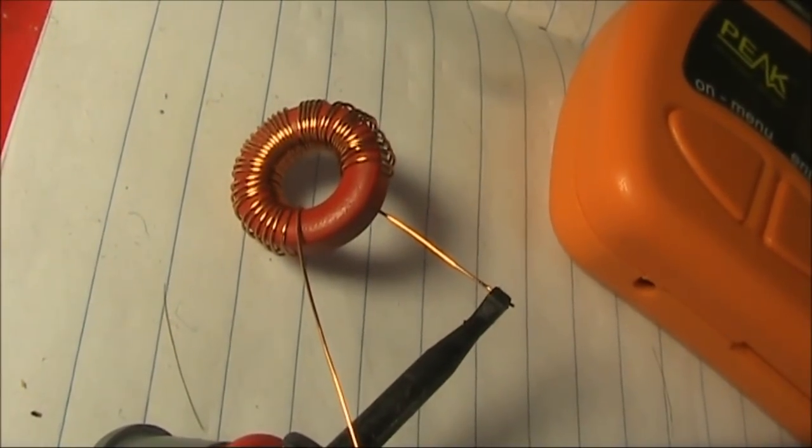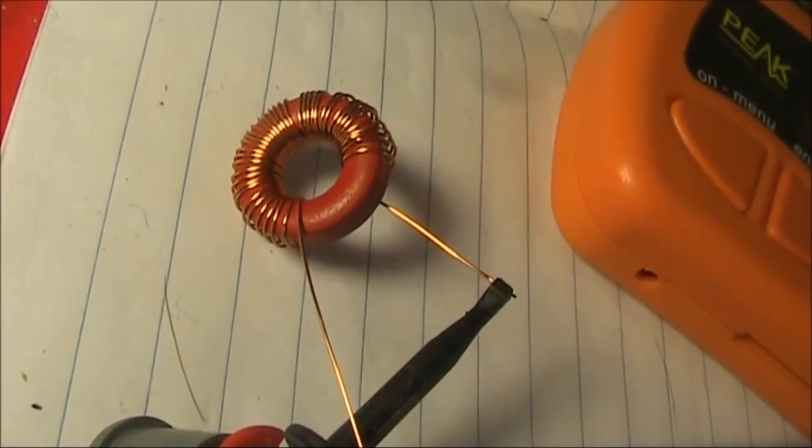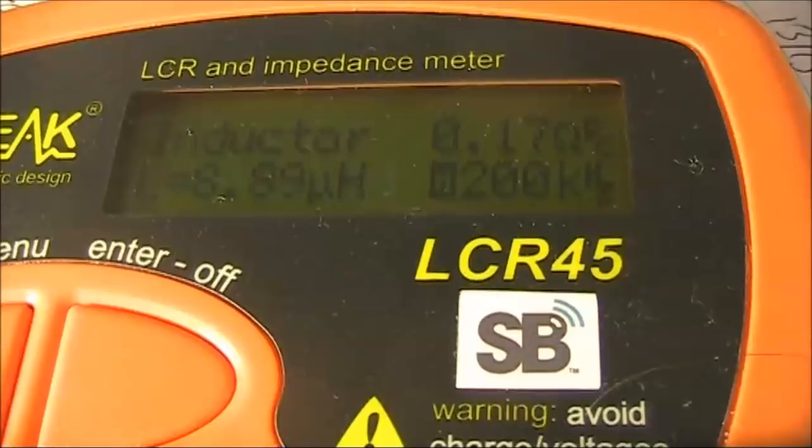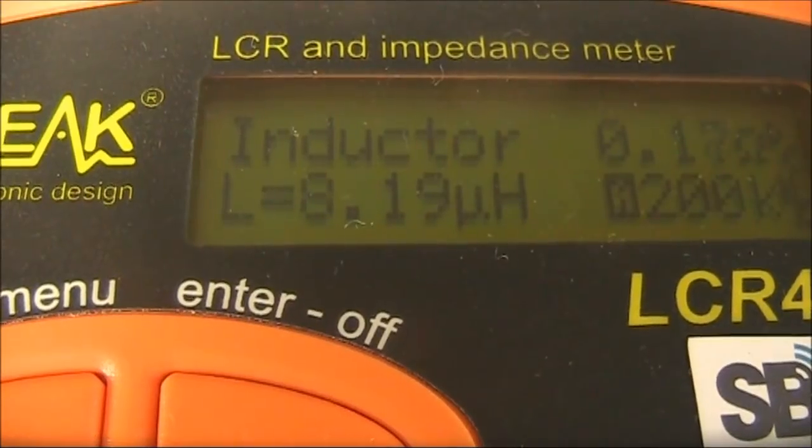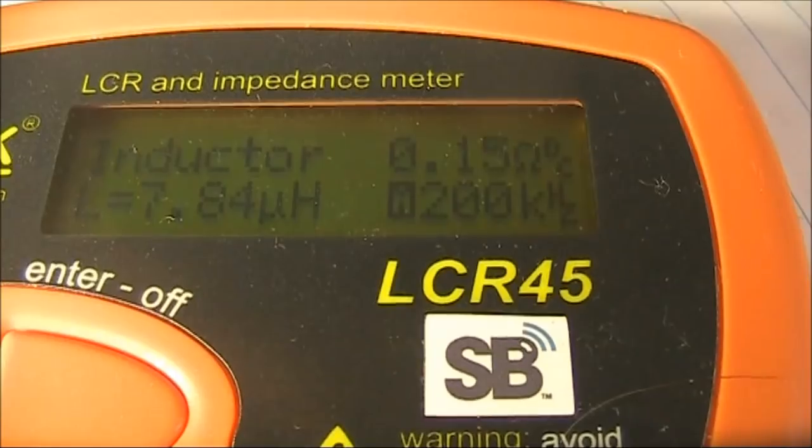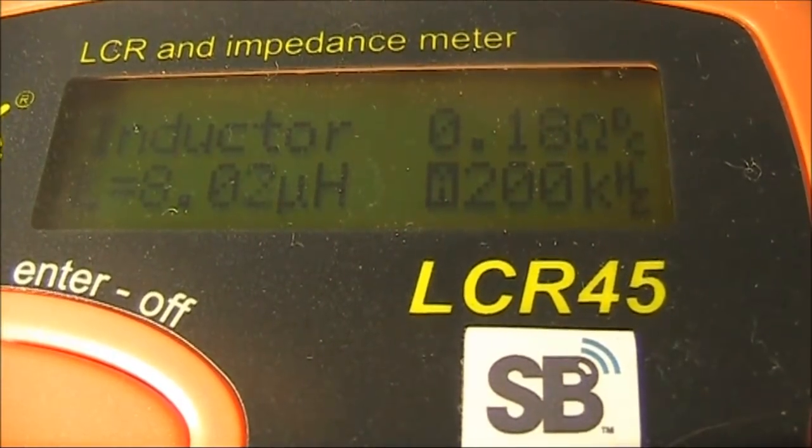Then we'll spread the turns around, and if it's still too high, we'll remove a few turns. It's down to 8.9. Remove two turns, and it's very close. If I spread them out a bit, bunch the turns slightly, and it's spot on.